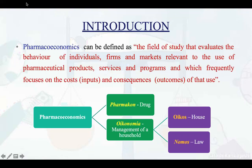Pharmacoeconomics is derived from 'pharmacon' meaning drugs, and 'economics' — 'nomia' means management of a household, 'oikos' means house, and 'nomos' means law. So it means how to manage the affordability of drugs under certain rules.